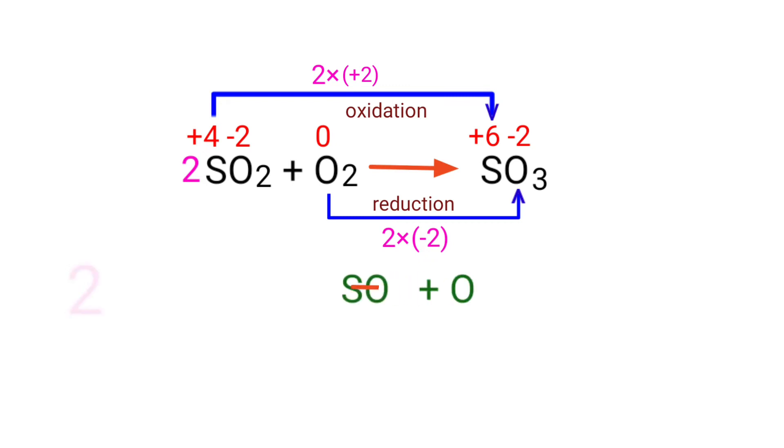Now you can write the equation as 2SO2 plus O2 gives us SO3.